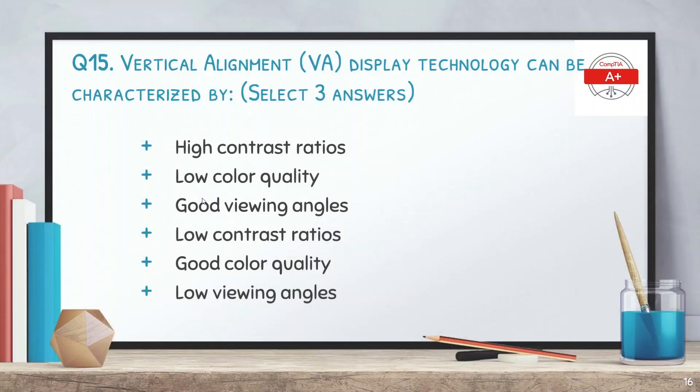Question number 15: what can vertical alignment (VA) display technology be characterized by? Select three answers. The options are high contrast ratios, low color quality, good viewing angles, low contrast ratios, good color quality, and low viewing angles. The correct answers are high contrast ratio, good viewing angles, and good color quality.